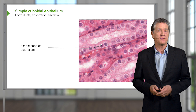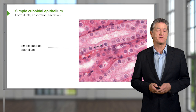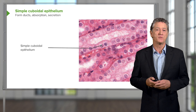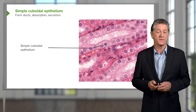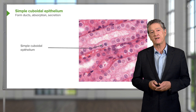Epithelia carry out four major functions, and if you're aware of those four major functions, sometimes it's easy to assign those functions to the particular epithelia. We saw earlier with the simple squamous epithelium the function was a very effective transcellular transport — very thin. Other epithelia, such as the simple cuboidal epithelium shown here, are designed for very efficient absorption and also secretion of material.